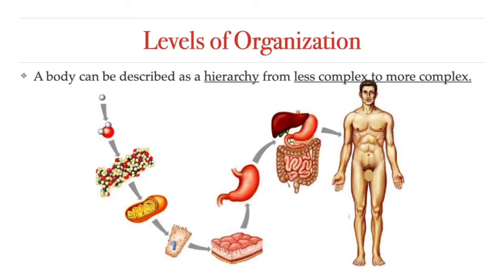Biology is the study of life. Since life is such a broad topic, scientists tend to break it down into several different levels of organization to make it easier to study. These levels start from the smallest building blocks of life and work up to the largest and most broad category. The atom is the smallest and most fundamental unit of matter. It consists of a nucleus surrounded by electrons. Atoms form molecules — a molecule is a chemical structure consisting of at least two atoms held together by one or more chemical bonds.